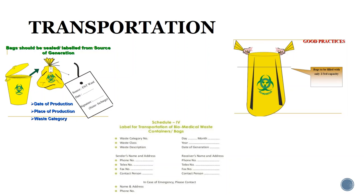For transportation: waste should be transported by wheel trolleys, containers, or carts not used for any other purpose. They should be easy to load and unload, have no sharp edges that could damage waste bags, and be easy to clean. Vehicles should be cleaned and disinfected daily. Bags should be sealed and labeled, showing the category, class, description of waste, sender's name and address, date of generation, and receiver's name.